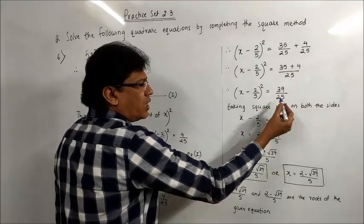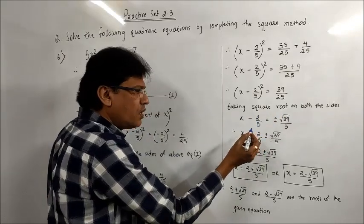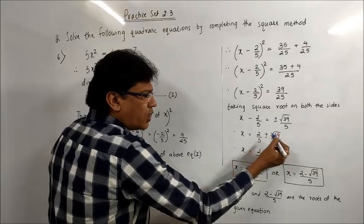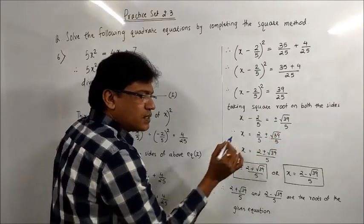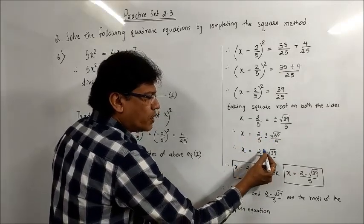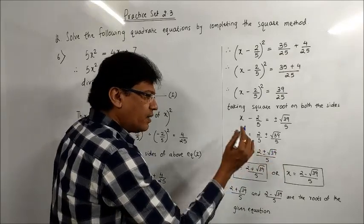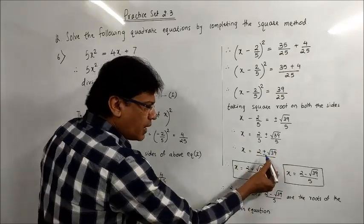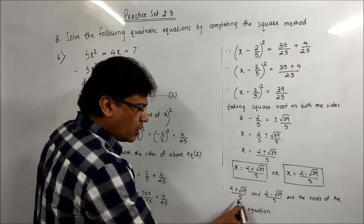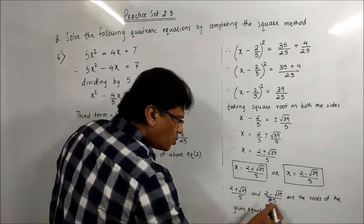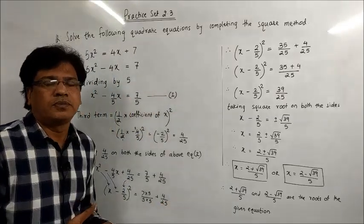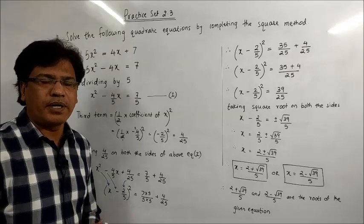Taking square root on both sides: the square is removed and the right-hand side becomes ±√39/5. Then -2/5 goes to the right-hand side becoming +2/5, so x = 2/5 ± √39/5. Since the denominator 5 is the same, I take it common: x = (2 ± √39)/5. Splitting into two roots: (2 + √39)/5 and (2 - √39)/5 are the roots of the given equation. This is how we solve quadratic equations by the completing squares method.